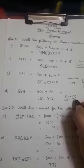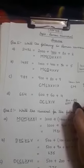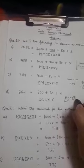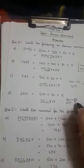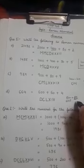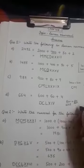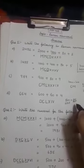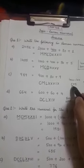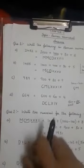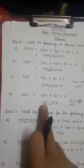Whenever I have to add something, I have to write that symbol on the right of the larger symbol. And whenever I have to subtract a number from a larger number, I will always write that symbol to the left of that number.